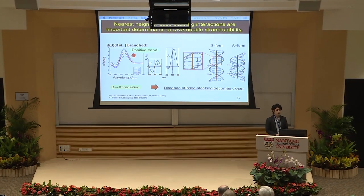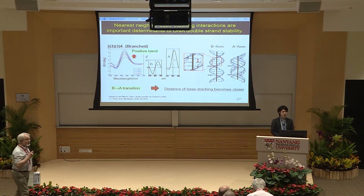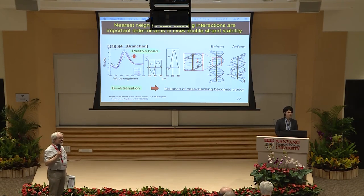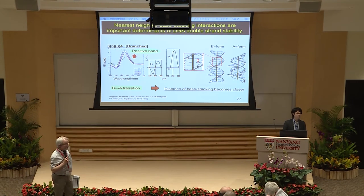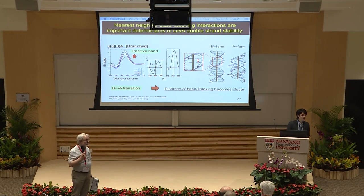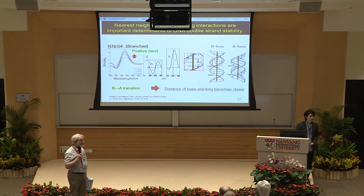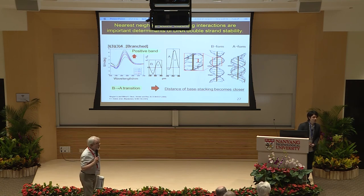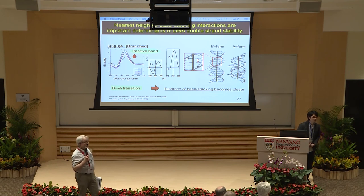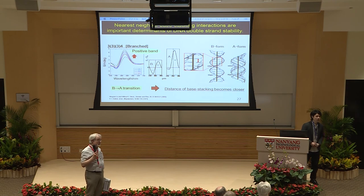Any more questions? I just have a suggestion. This transition to the A-form is possible under low hydration conditions, as you know. So why don't you just measure the contour length of shorter DNA molecules, like 1,000 base pairs? The contour length of the A-form would then be 218 nanometers, whereas in the B-form it's 340 nanometers. That is a significant reduction that you could measure. Just a suggestion. Thank you.